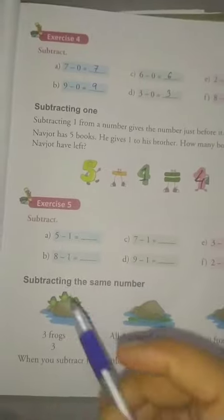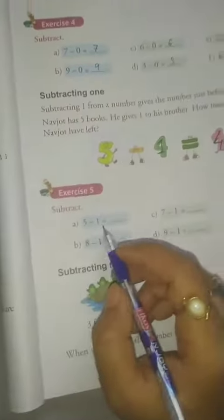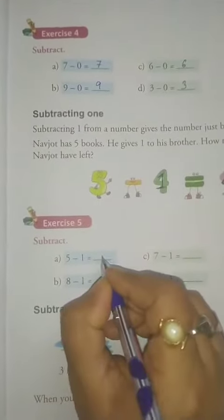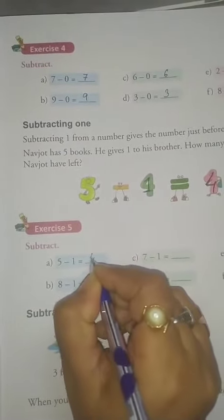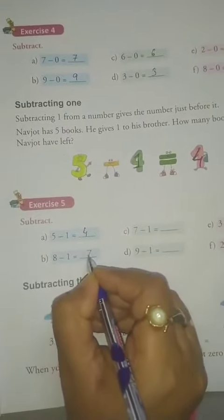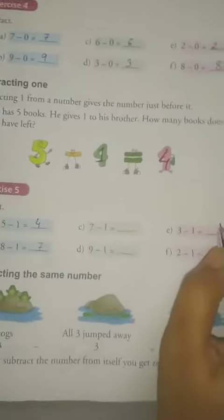Now, come to exercise number 5. Subtract. We already found 5 minus 1 is equal to 4. 8 minus 1. What comes before 8? 7. 8 minus 1 is equal to 7.